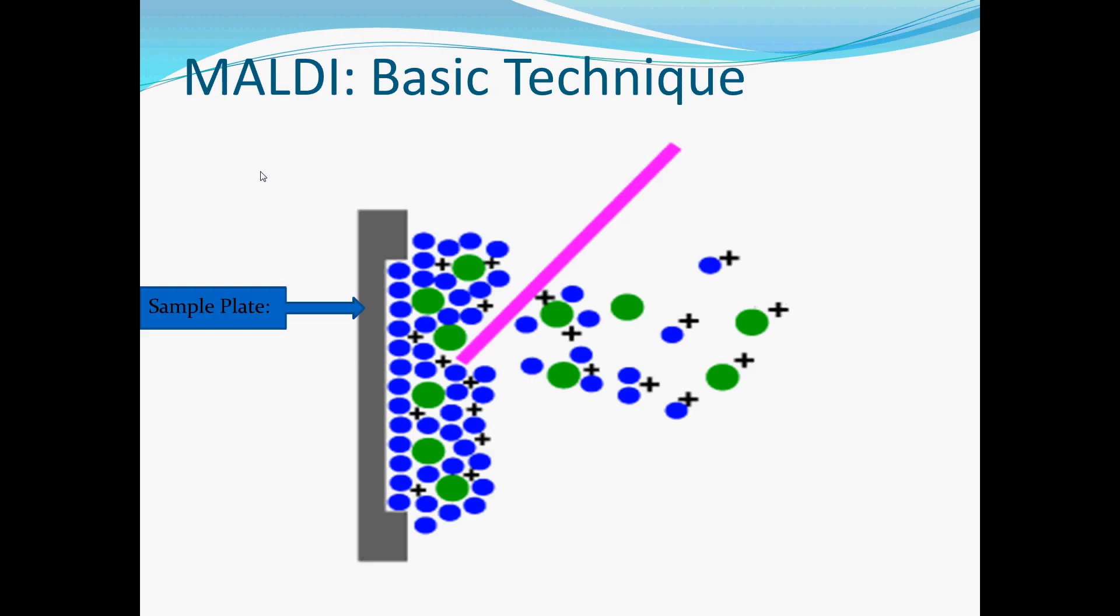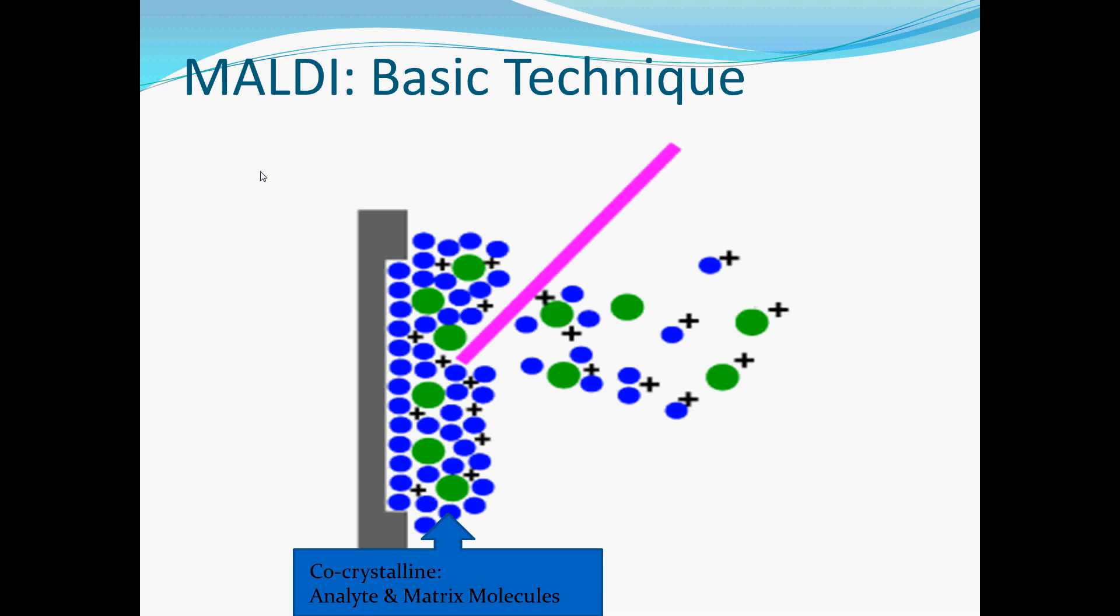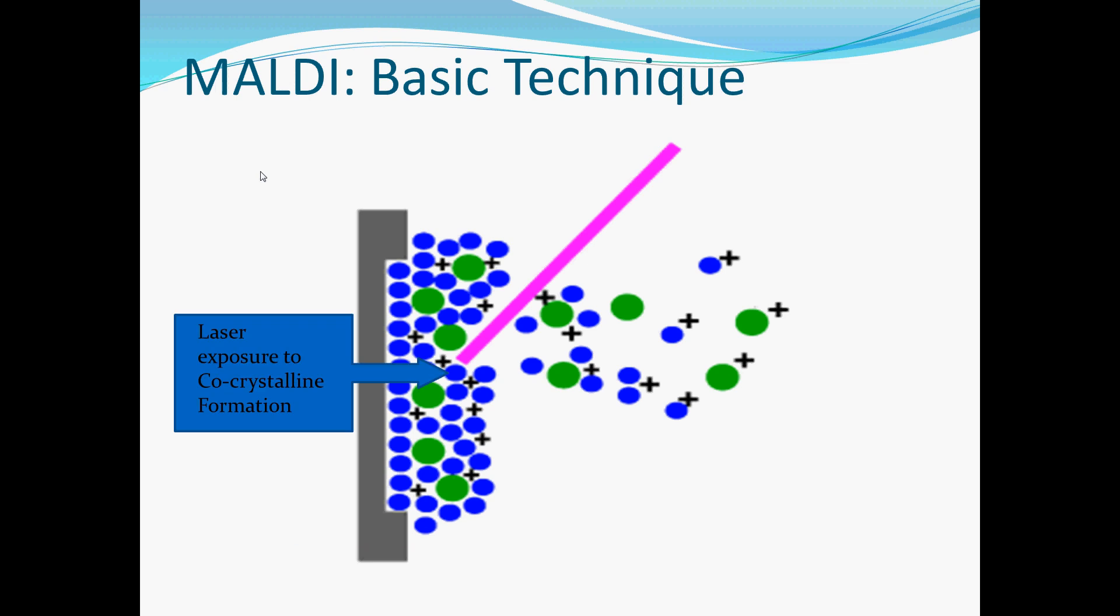MALDI, the basic technique involves a sample plate which holds a combination of your matrix and analyte molecules. A laser is ablated across the surface of your sample. Your analyte and matrix molecules are often referred to as a co-crystalline solution. Laser exposure to your co-crystalline formation results in vibrational excitation of your matrix molecules.